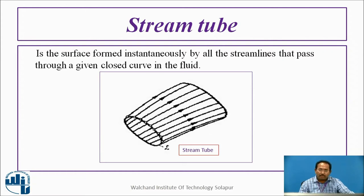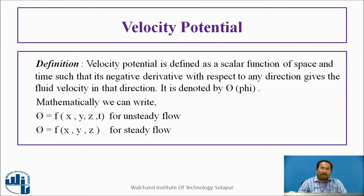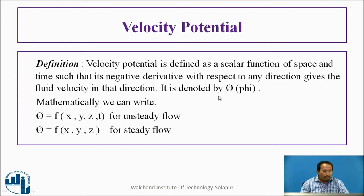Now we will look at velocity potential and stream function. Both are scalar functions, and from these we define whether the flow is irrotational or rotational. Velocity potential is defined as a scalar function of space and time such that its negative derivative with respect to any direction gives the fluid velocity in that direction. It is denoted by phi. Mathematically, phi is a function of x, y, z, t for unsteady flow, and phi is a function of x, y, z for steady flow.